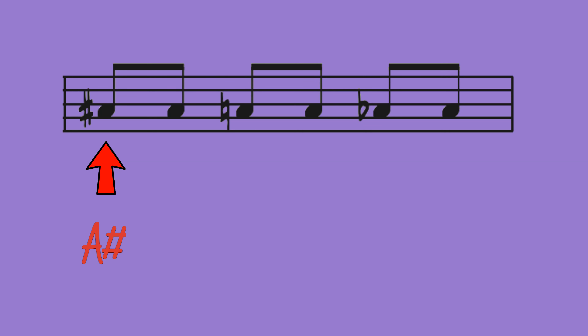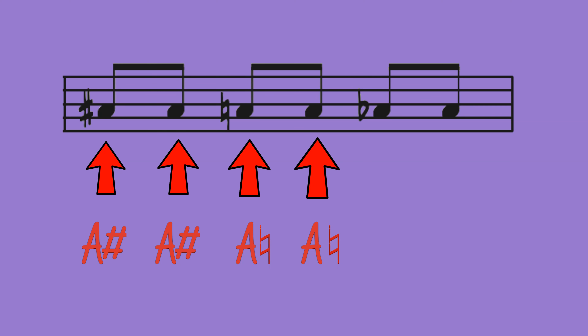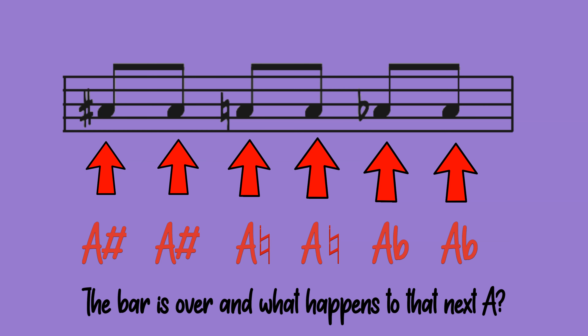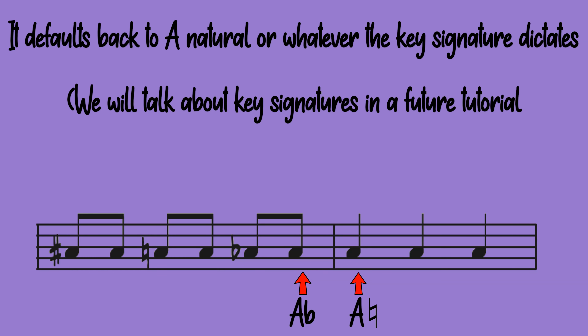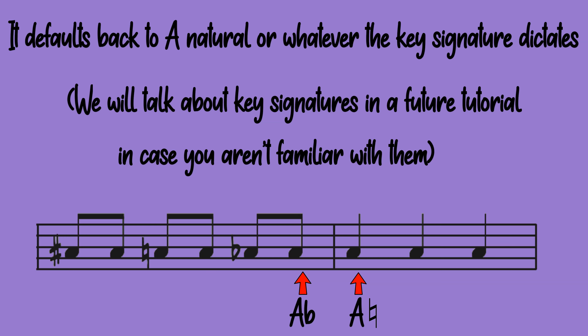Let's change accidentals in one bar. This is A sharp, A sharp, A natural, A natural, A flat, and finally an A flat. The bar is over and what happens to that next note? It defaults back to an A natural or whatever the key signature dictates. We will talk about key signatures in a future tutorial in case you aren't familiar with them.